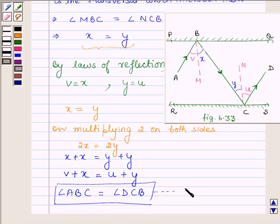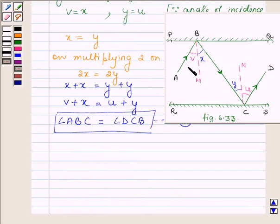Thus we have angle ABC is equal to angle BCD. And this implies line AB is parallel to CD.